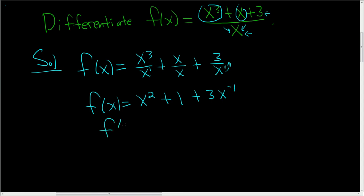We're finally ready to take the derivative, so f prime of x. The derivative of x squared is 2x via the power rule. The derivative of 1 is 0.